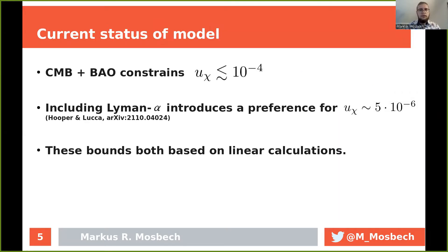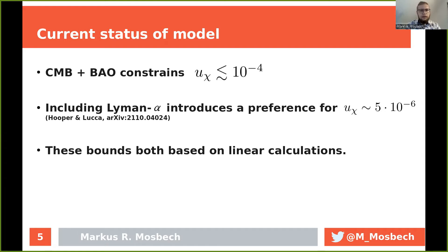The current status of this model is that in our first paper we used the cosmic microwave background and baryon acoustic oscillations to constrain it to a U_chi parameter of less than 10 to the minus 4. Then later, a different group followed up on our work including Lyman-alpha data, which introduced a preference for a non-zero interaction. These are both based on linear computations, though it has been used to map to non-linear Lyman-alpha data. No proper non-linear evolution of this model has been done as far as we are aware.